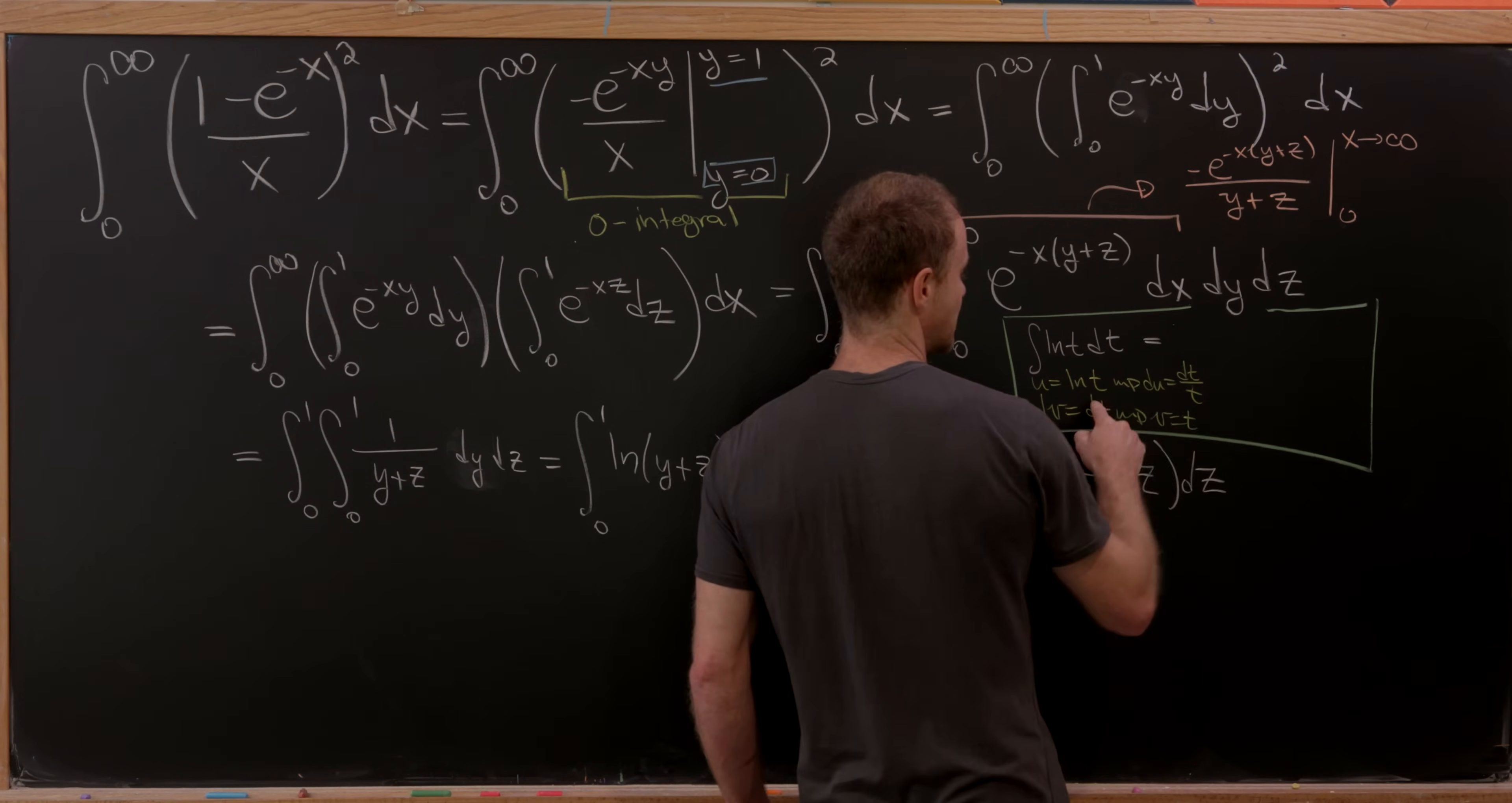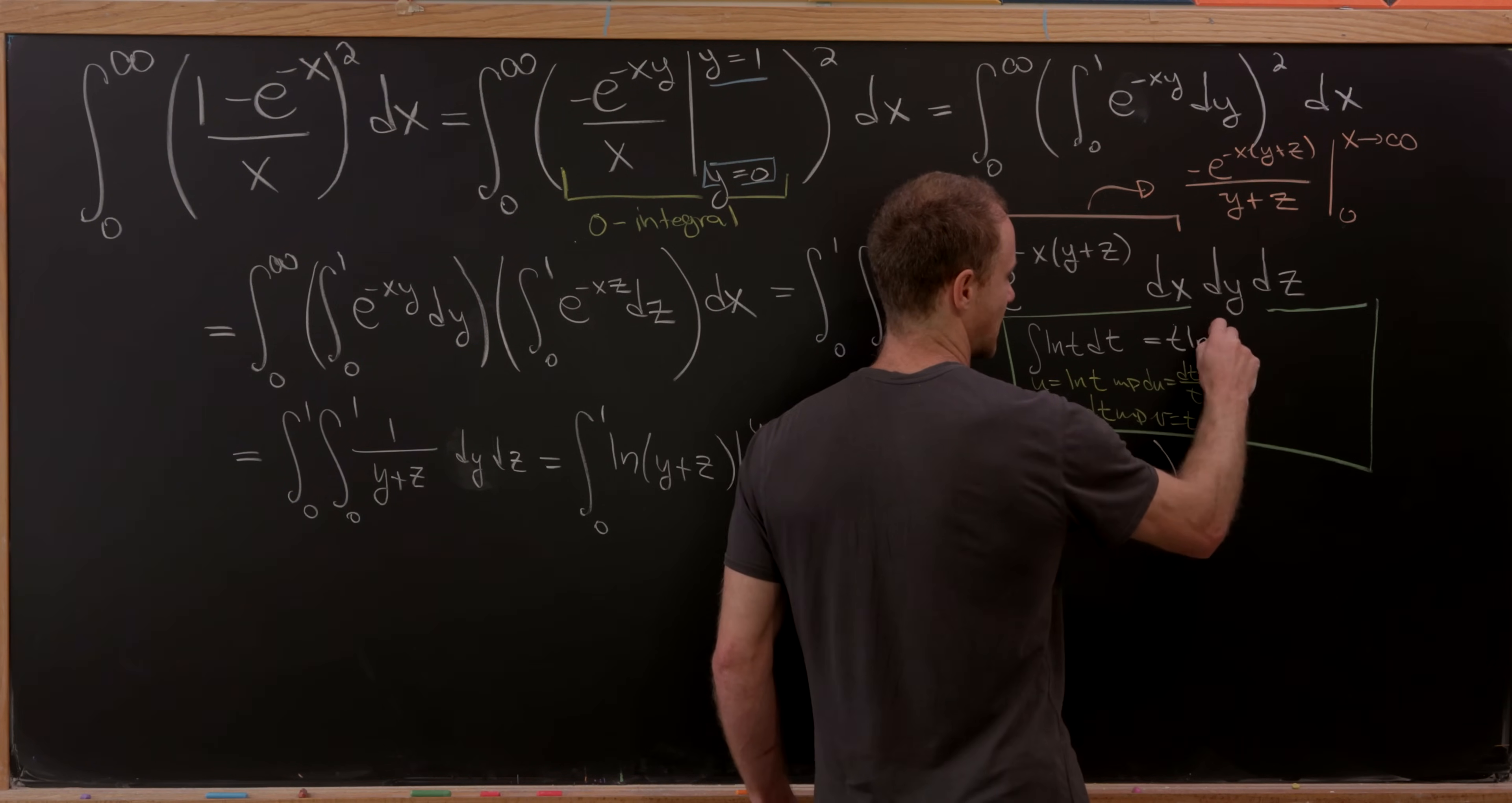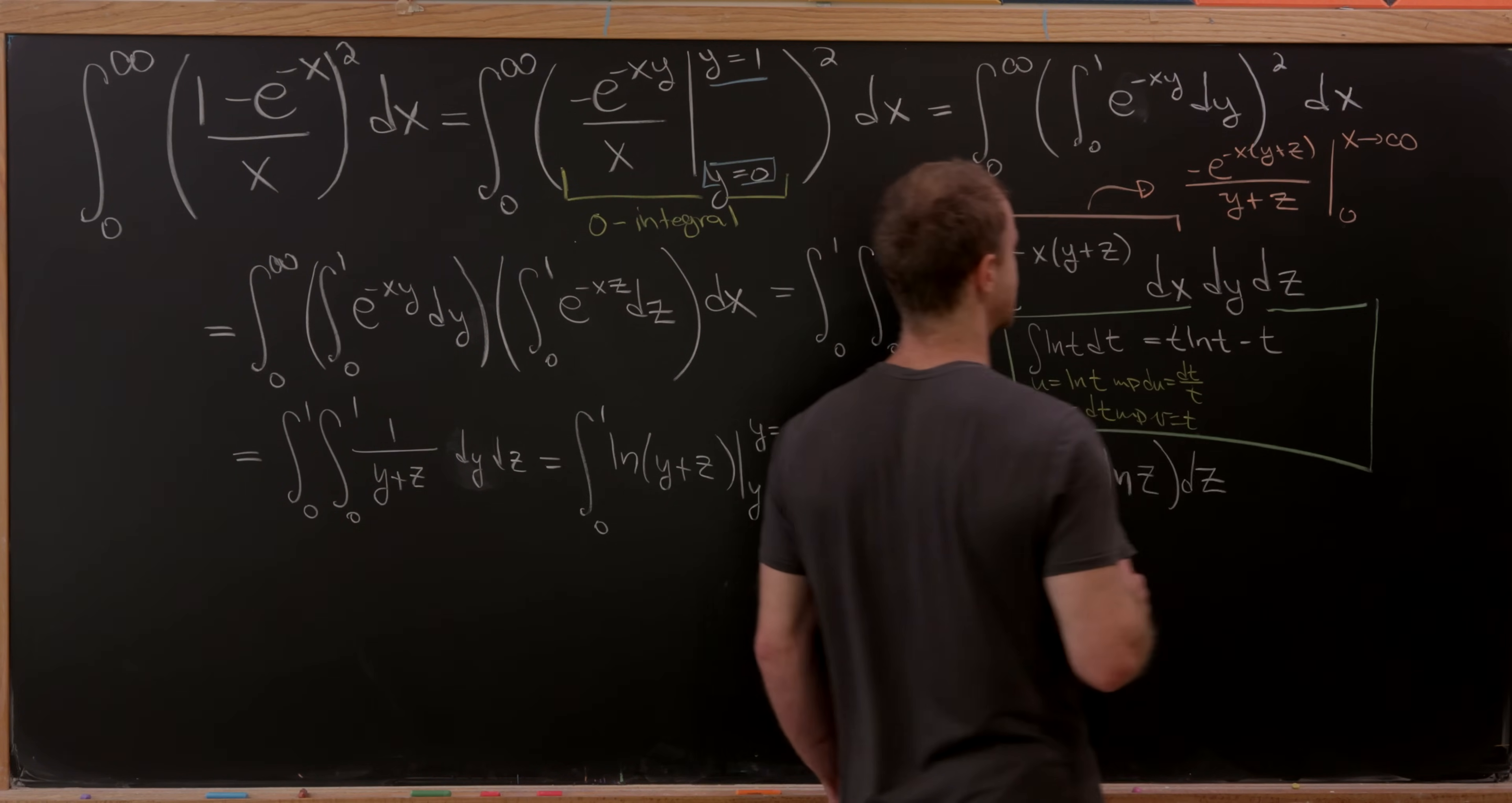And then by the integration by parts formula, that will give us, let's see, u times v, so that'll be t ln(t) minus the integral v du. But notice all of that cancels, and we'll just have the integral dt, so in other words, we have t here.